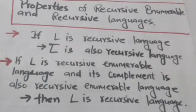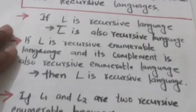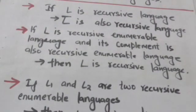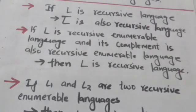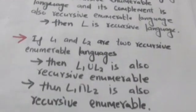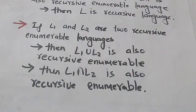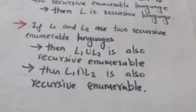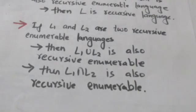If L is a recursive language, then its complement is also a recursive language. If L1 is a recursive enumerable language and its complement is also recursive enumerable, then L1 is a recursive language. If L1 and L2 are two recursive enumerable languages, then L1 union L2 is recursive enumerable, and L1 intersection L2 is also recursive enumerable.